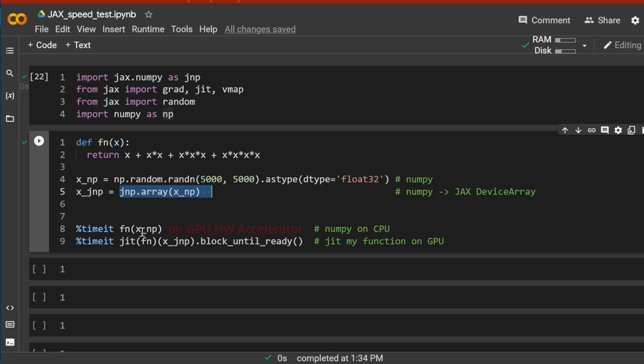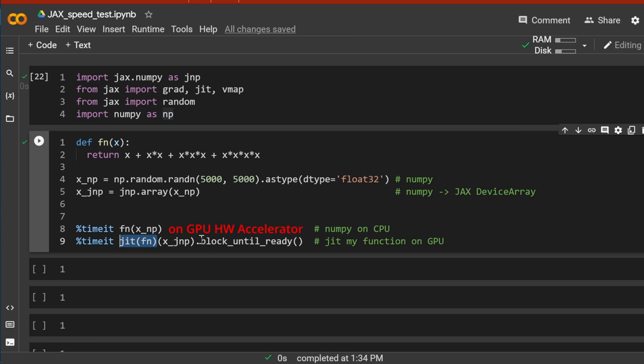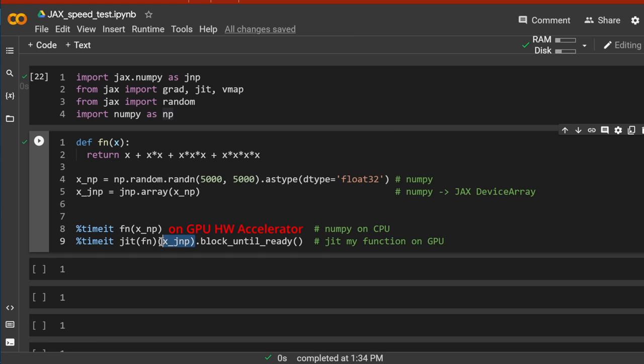And then we do a time it, and first I call my function and I apply it on the CPU on my NumPy array. And then I do the same, I call the same function as you can see. The function stays absolutely the same. I have to do nothing else, and now I just compile it in time with the just in time command, with our XLA compiler, and then I feed of course the JAX device array to this. And we not even do it on a TPU, we just do this on a GPU.